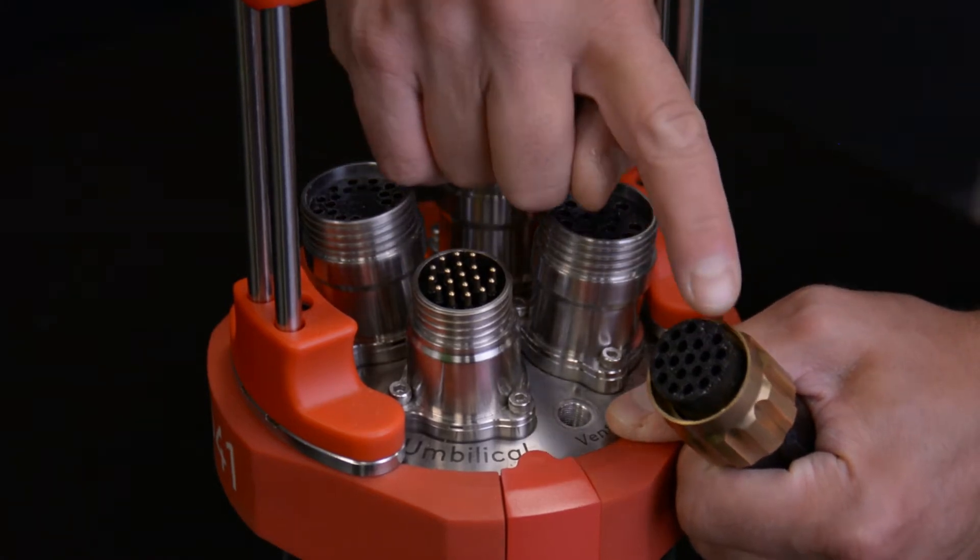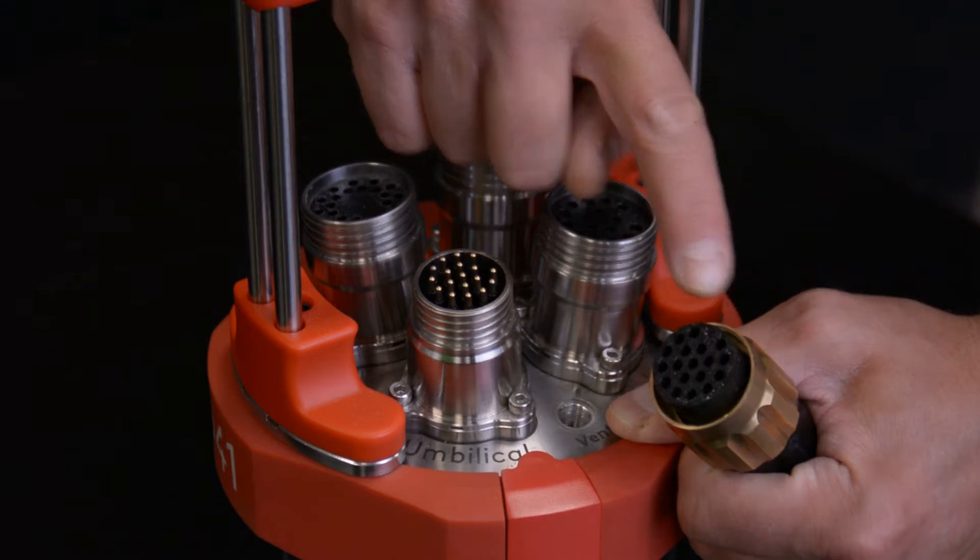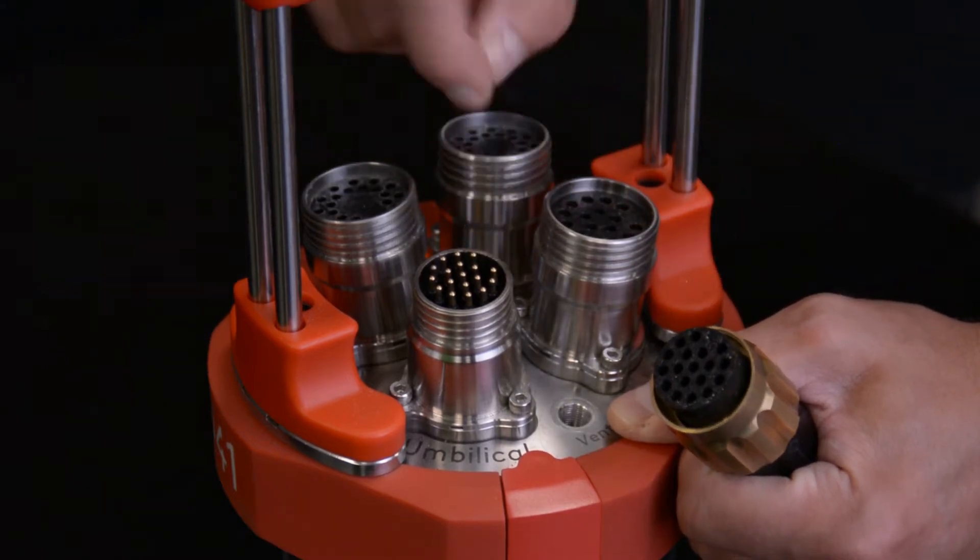On the umbilical connector, you'll notice that one socket hole on the outer ring is not present. This must be matched with the missing pin of the connector on the bottle.